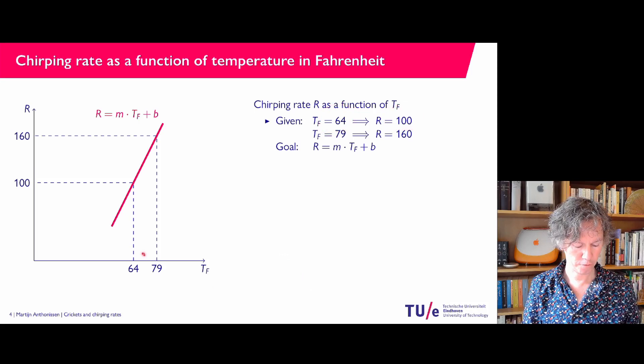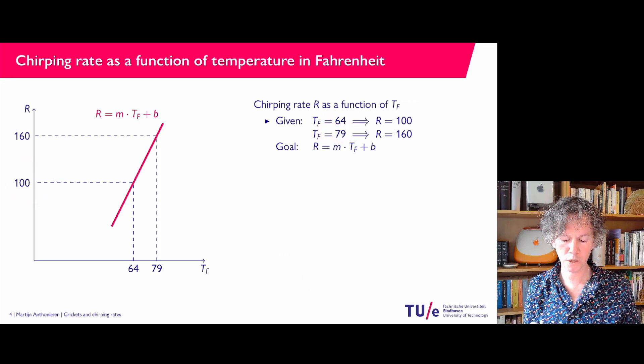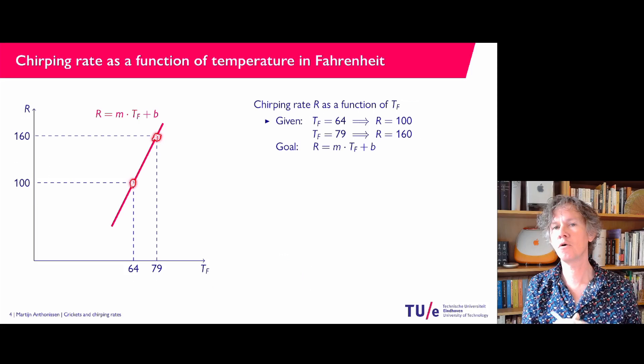If I put the temperature on the horizontal axis, then at 64 I find a chirping rate of 100 on the vertical axis. Similarly, for Tf equals 79, the corresponding chirping rate is 160. So I find one data point and another data point. And as you know, if you have two points in the plane, there is exactly one straight line going through them.